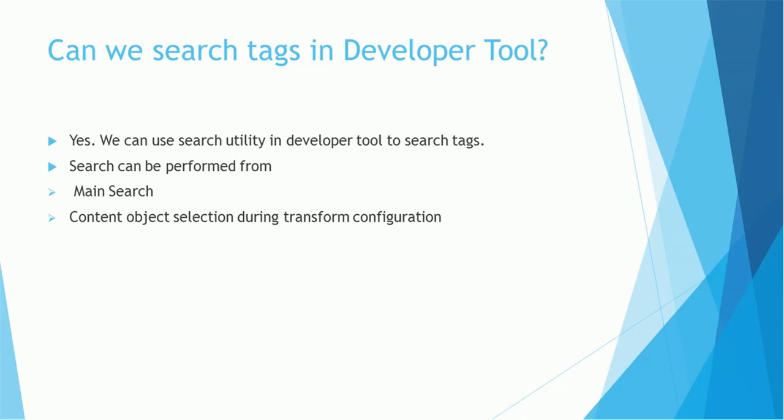Can we search tags in the developer tool? Yes. We can search tags in the developer tool using the search utility present in the developer tool. The search can be performed from the main search or using content object selection during transformation configuration. These are the two ways we can use tags.